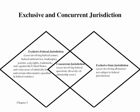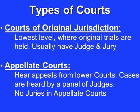Some cases can be heard only in federal courts; in these cases, federal courts have exclusive jurisdiction. Many cases may be tried in a federal court or a state court; in such instances, the federal and state courts have concurrent jurisdiction. A court that hears a case on appeal from a lower court has appellate jurisdiction over that case. The Supreme Court exercises both original and appellate jurisdiction.